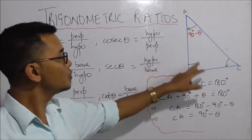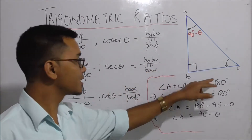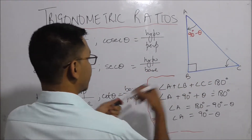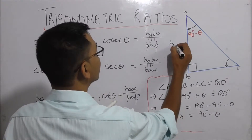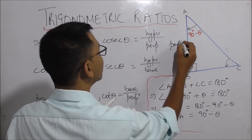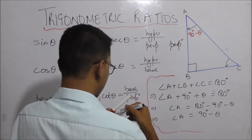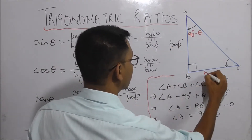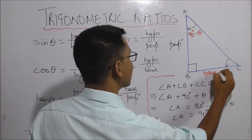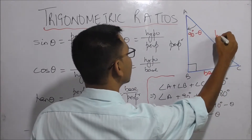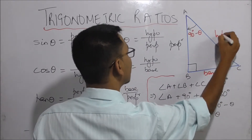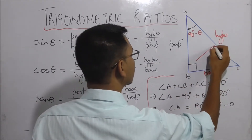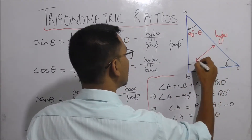We are going to talk about the sides of the triangle. Here, if I want — that's a perpendicular — we are going to have the hypotenuse. In a right triangle, the hypotenuse is the opposite side.